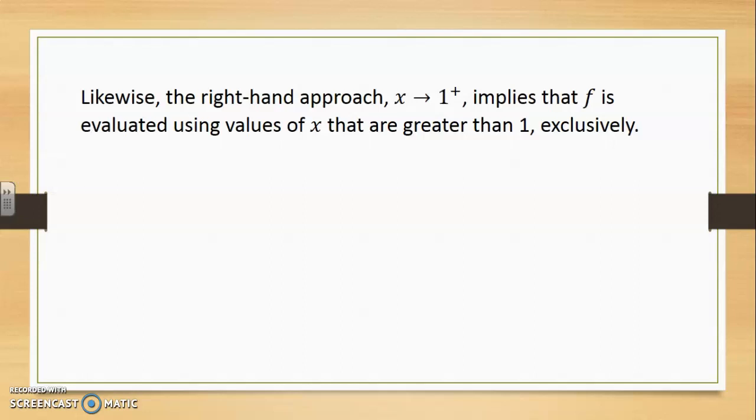Likewise, the right-hand approach, x heading towards 1 plus, implies that f is evaluated using values of x that are greater than 1 exclusively. This time, since we are letting x approach 1 from the right, the function's rule is no longer x squared plus 2x, but rather root of x plus 3. This is a radical function who would have issues at minus 3, but we are approaching 1. So we're well within its domain, and by direct substitution, we get a result of 2.